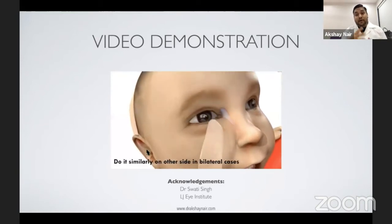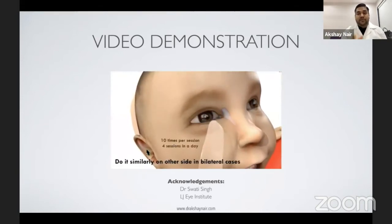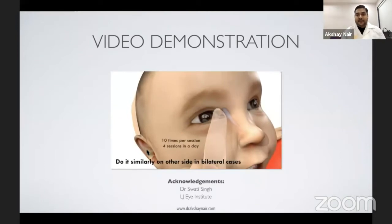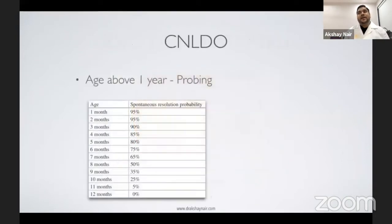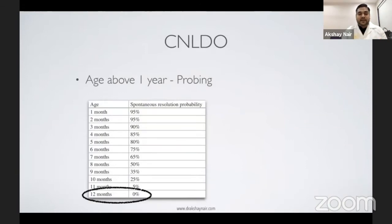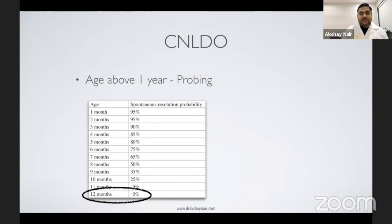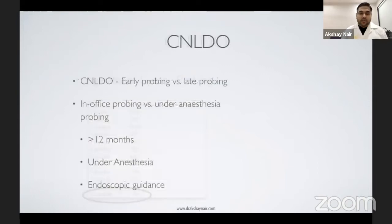Improved demonstration has been shown to improve compliance and outcomes. Simply telling the parent about the treatment is not enough. After one year, the spontaneous resolution probability drops to 0%, yet we still see children beyond one year being advised conservative management — that does not work. In these cases, probing must be performed. The cutoff for probing is 12 months.